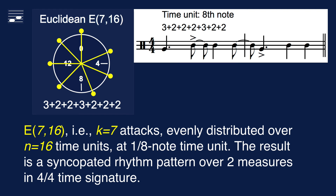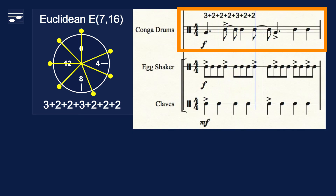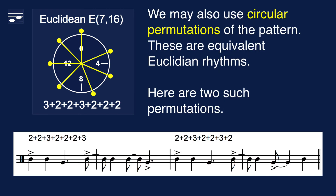Here's the same rhythm in staff notation. The time signature is 4/4, the time unit is the eighth note, so the pattern duration is two measures. Note that the result is a syncopated rhythm, played by a pair of congas against a regular background. Equivalent Euclidean rhythm patterns are obtained through circular permutation. Here we see two such permutations from a total set of seven.